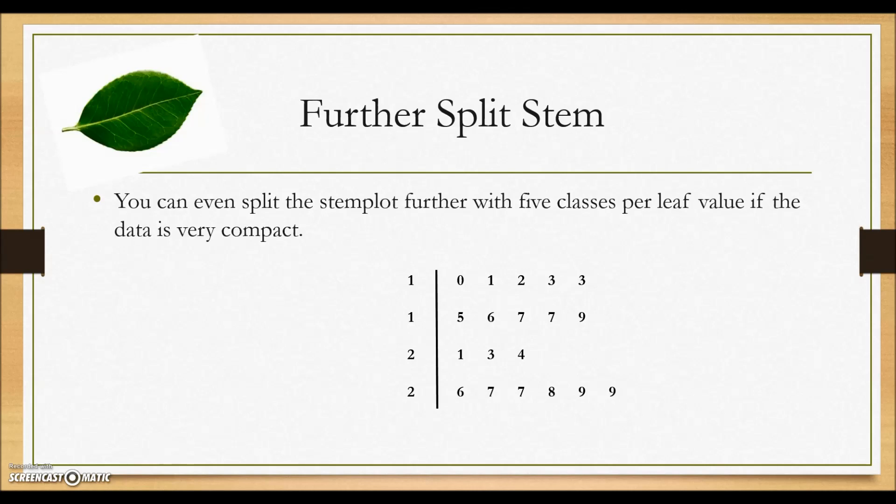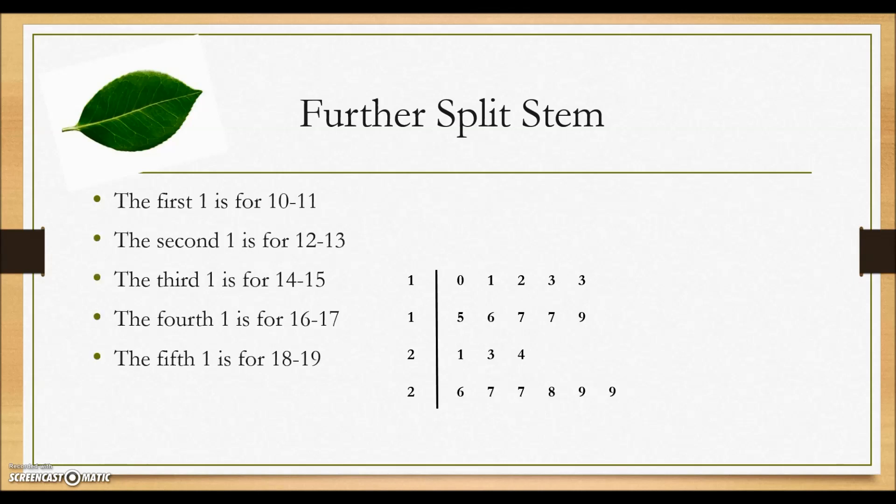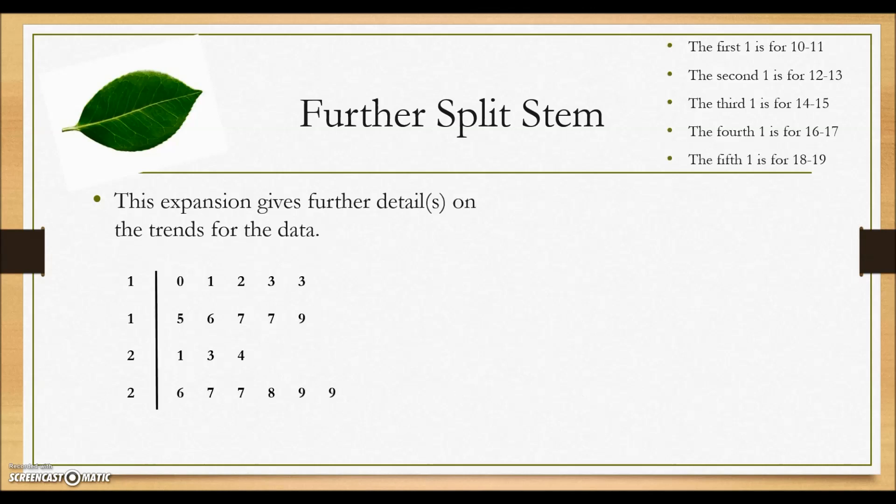We can even split the stem plot further with five classes per leaf if the data is very compact. To do that, we would let the first one stand for the interval 10 to 11. The second one is for the interval 12 to 13. The third one is for 14 to 15 and so on. That will take our original stem plot with the first split and create the following split stem.